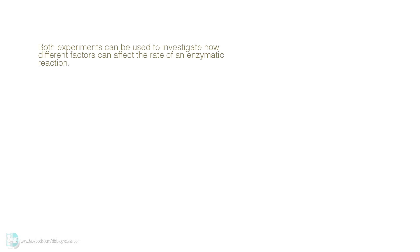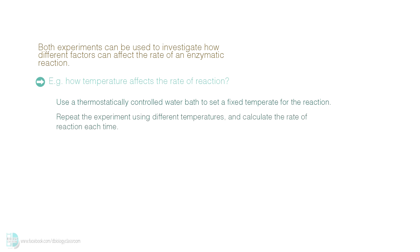Both of the experiments can be used to investigate how different factors can affect the rate of reaction. For example, if you want to know how temperature affects the rate of enzymatic reaction, you can use a thermostatically controlled water bath to set a fixed temperature for the reaction. Repeat the experiment using a different temperature and calculate the rate of reaction each time. You will get to see how the rate changes as temperature is altered.